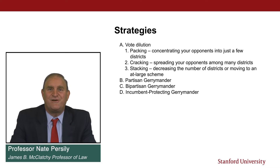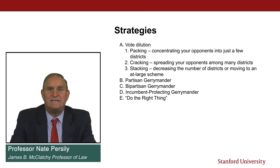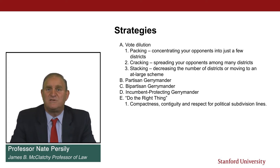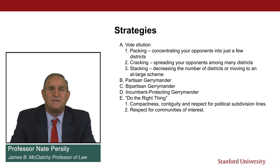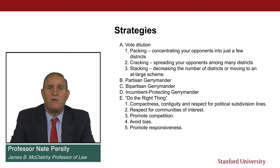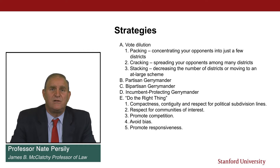A fifth option is what many people would say is the right thing to do: some kind of nonpartisan strategy that takes the manipulation out of the process. This could involve specific criteria like promoting compactness, contiguity, and respect for political subdivision lines — drawing districts that are more circular or square or that overlap with county lines. Other values include respecting communities of interest, promoting competition, avoiding bias, or promoting responsiveness. Courts in particular, when they adopt plans, will often adopt the least-change plan, making sure districts stay as consistent over time as possible.